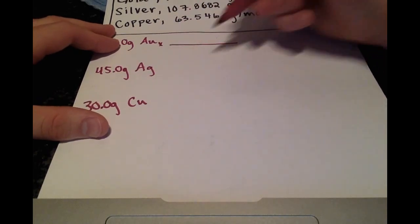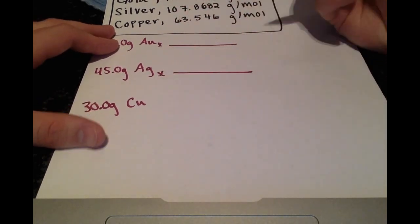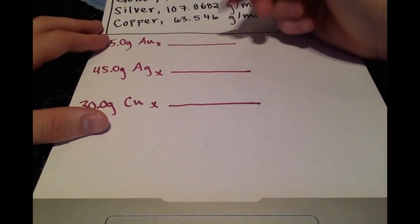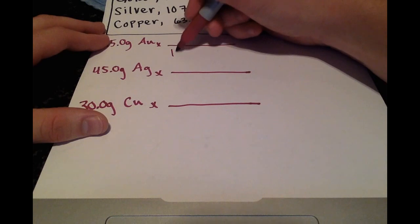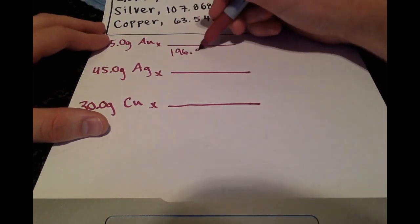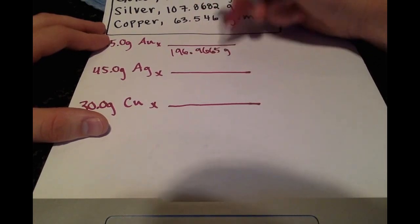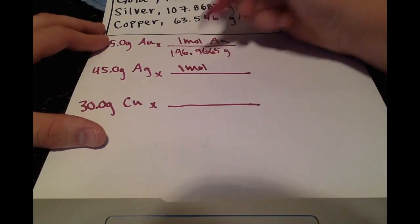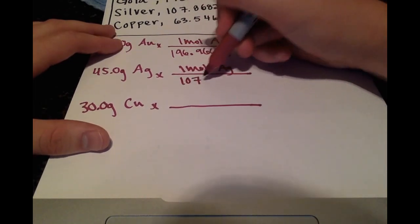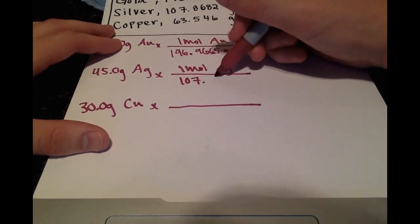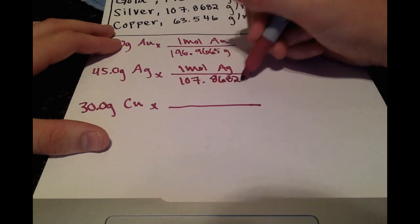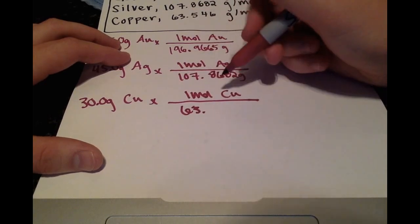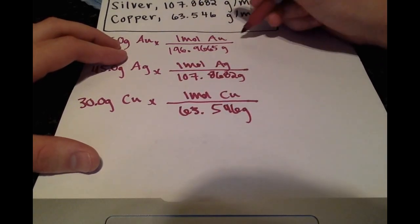So each one is going to be multiplied by the gram mole conversion factor. So for gold, that's 196.9665 grams per one mole of gold. And for one mole of silver, we have 107.8682 grams. And for one mole of copper, we have 63.546 grams.